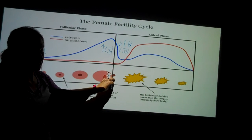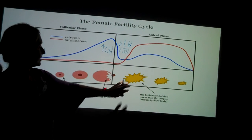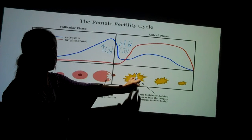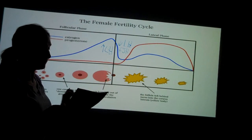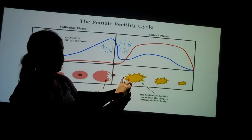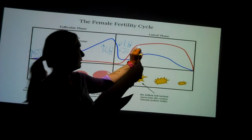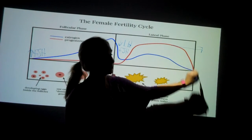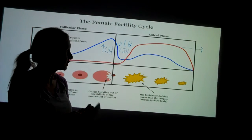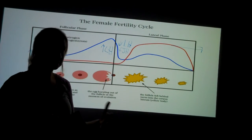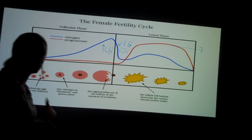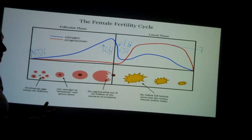If it is fertilized, this corpus luteum stays, and it produces HCG, or human chorionic gonadotropin, and it maintains this corpus luteum, which maintains this progesterone production, so that drop in progesterone would not occur. You would have an absent menstrual cycle or menstrual flow, which would cause the lady to suspect, 'I missed my period, I may be pregnant.'